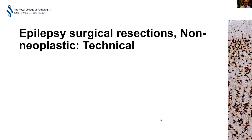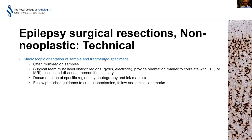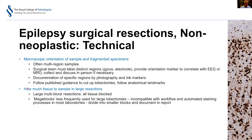The next topic is epilepsy surgical resection of non-neoplastic tissue. Macroscopic orientation of fragmented specimens can be a significant challenge. Often these are multi-region samples; the surgical team must label distinct regions such as gyrus and electrode, provide an orientation marker to correlate with EEG, and collect and discuss findings in person. Communication with the surgical team is really important. In the pathology department, photography and ink markers should be used, published guidance for cutting up lobectomies followed, and anatomical landmarks documented. We recommend that all tissue is blocked in large multi-block resections.